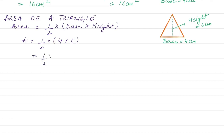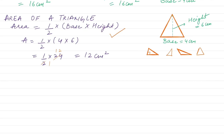We know that 6 times 4 is 24, and 24 divided by 2 is 12. So the area is equal to 12 cm². Always remember the units, because units are just as important as your answer. The area formula remains the same whether it is a right angle triangle, acute angle, or obtuse triangle. Whatever triangle is given to you — even equilateral — the formula stays the same.